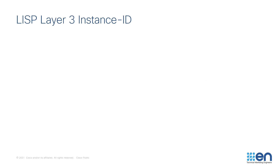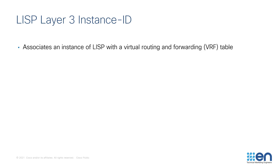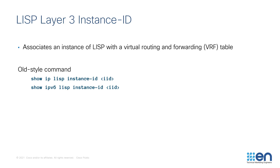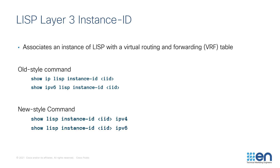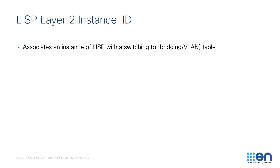So what differentiates a LISP Layer 3 and Layer 2 Instance ID? A LISP Layer 3 Instance ID is associated with a VRF. There are two ways to see the output of your configuration, using either the old style or the new style commands. Depending on your platform and your code version, both command types may be supported. The new style commands are preferred, and you'll see why as we discuss LISP Layer 2 Instance IDs. These are associated with a switching table, or essentially a VLAN. There is no old style command for LISP Layer 2 Instances, and that's why the new style command is preferred — it unifies the command structure for IPv4, IPv6, and Ethernet at the same time.